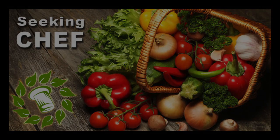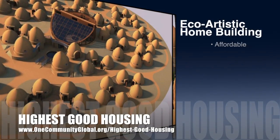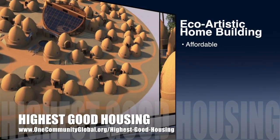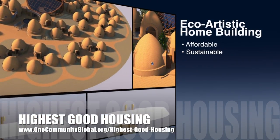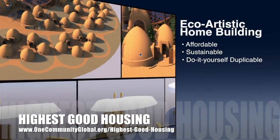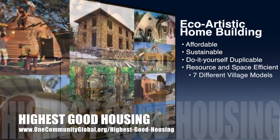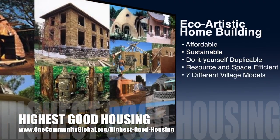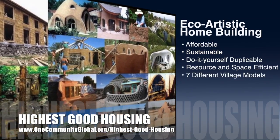One Community's approach to Highest Good Housing is eco-artistic home building that is affordable, sustainable, do-it-yourself duplicable, resource and space efficient, and consists of seven different sustainably constructed village models.